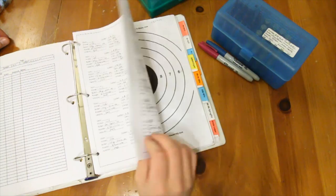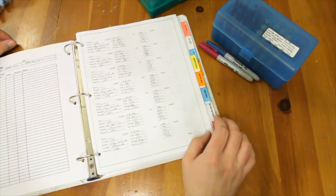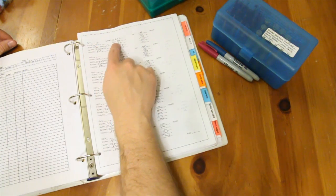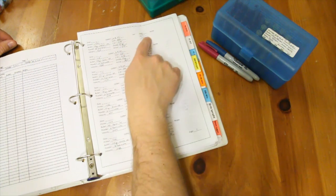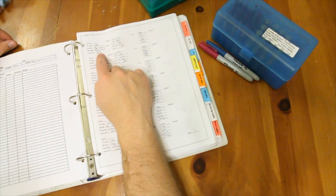Next, I just have these simple pages and I can add more as I need them. Lets me put everything from the caliber, primer, bullet, powder, case, overall length, charge, groups I shot with it, velocity, notes, and a place to put the average velocity.